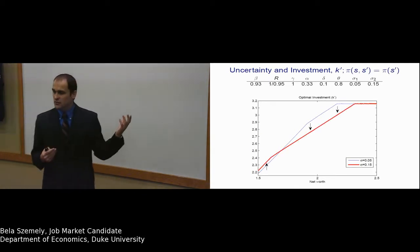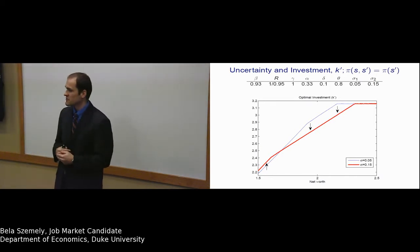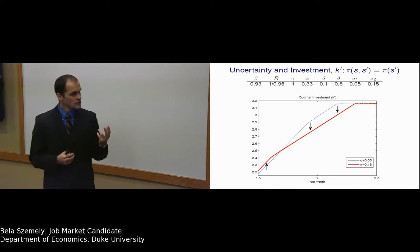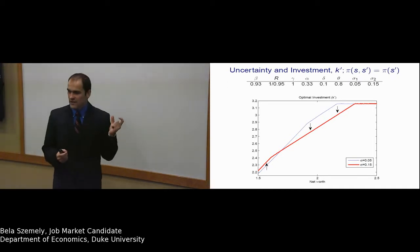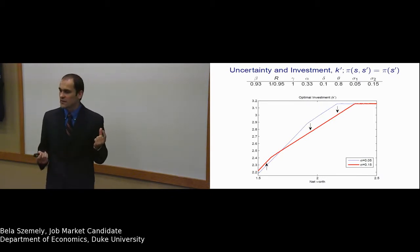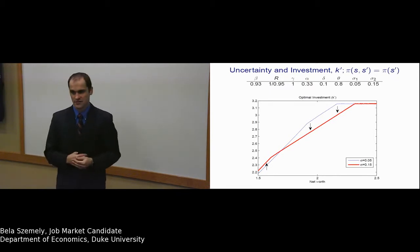The red line depicts the new investment decisions of firms when the volatility in the economy is high. Notice three things in this graph. First, when firms have low levels of net worth, upon an increase in uncertainty, they will increase their investment decision.